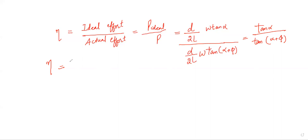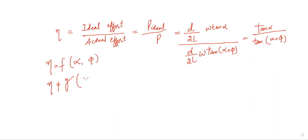From the equation of efficiency of the screw jack, we can infer that the efficiency is independent of the weight lifted or effort applied, but it depends only upon the helix angle α and the friction angle φ. The efficiency of a screw jack is independent of the weight to be lifted, independent of the lever arm, and independent of the mean diameter.